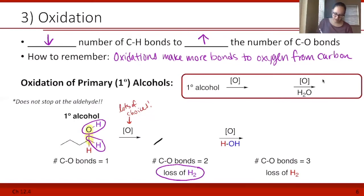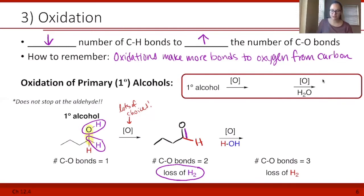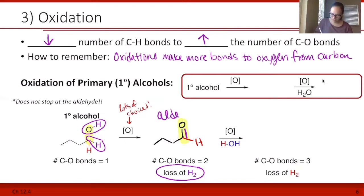Let's draw that out. We're going to have our same carbon chain — everything in black is the same. I'm going to draw in that red hydrogen just for continuity. And then where the two purple hydrogens were, we're going to have a double bond in its place. Now we have two carbon-oxygen bonds because we have a double bond, and this molecule is then an aldehyde. So when we oxidize a primary alcohol, we get an aldehyde.